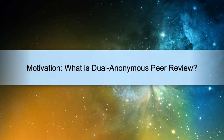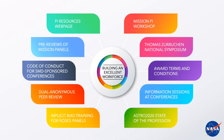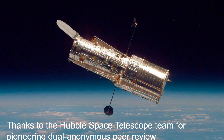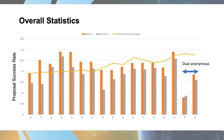Let's start with the motivation. SMD is strongly committed to developing an excellent workforce both within NASA and within our extramural community. I wanted to credit the pioneering work performed by the Hubble Space Telescope team in implementing dual anonymous peer review. This is data from Hubble for each of its annual calls for proposals over the past dozen or so years. You can see the inferred male PI success rate exceeds slightly the inferred female PI success rate year after year. It's like flipping a coin and coming up heads 12 times in a row.